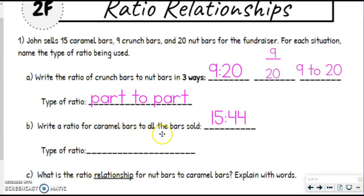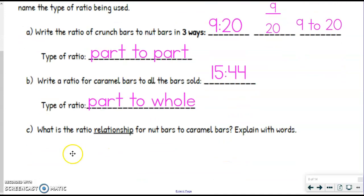What type of ratio is this? Well, the part would be the caramel bars, and since it's all bars sold, it would be the whole, so part to whole. So all that is reviewed. This is the new part.